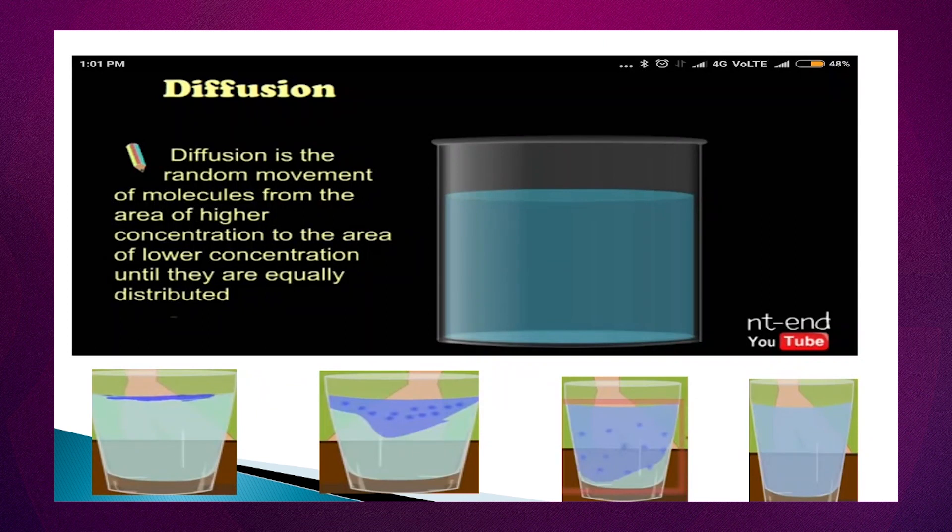Toh diffusion kya hai, ab hum baat kar rahe hai, diffusion ka matlab hai jab do particles aapas mein mix hogi hain, unko hum isko hum bolte hain diffusion. Jaise ke hawa mein aapke agar batti ki fumes mix hogi hain, ya pani ke andar aapke ink mix hogi hain, ya aapke pani ke andar aapke poster colors aap mix karte ho, toh is tarah se chemicals bhi hain mix karte dekhenge abhi, kuch activities karke dekhenge, unke liye prepare rahiye, aur niche comment section mein aapne answers zaroor likhenge aap.